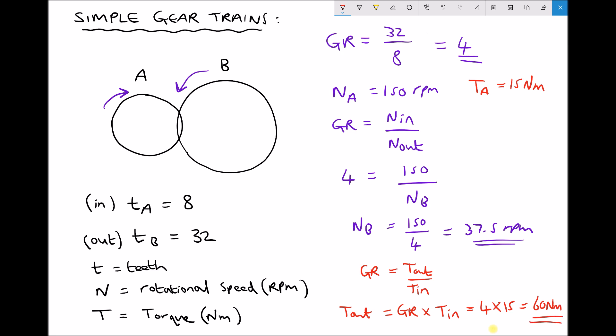So providing the gearbox is 100% efficient, the output torque is going to be 4 times the input torque. So although the speed decreases by 4 times, the torque increases by 4 times. We're gaining mechanical advantage there.